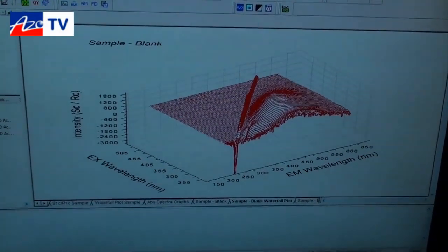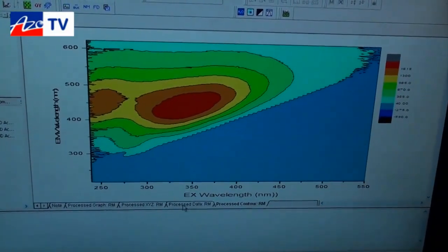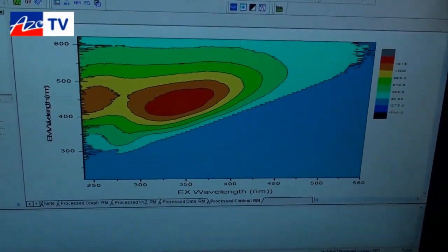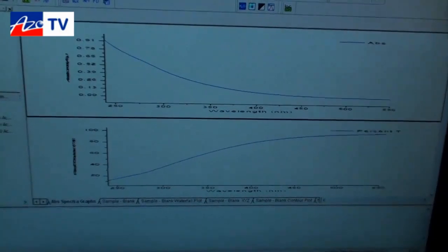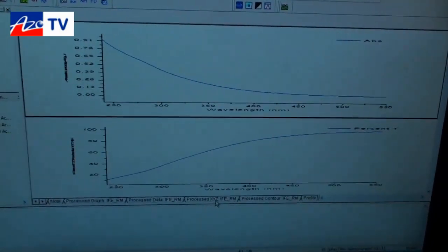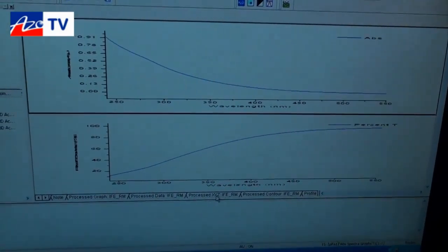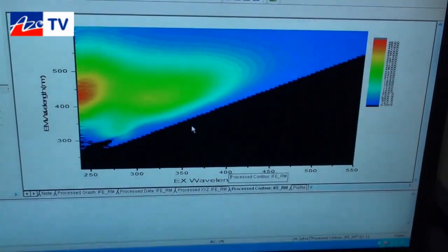So this is a raw picture of the unprocessed data. Then I'll walk you through some of the processing steps that we can apply. One of the processing steps involves the inner filter effect correction. And the inner filter effect correction can be followed by removal of the overlap band for the excitation and the emission. So we process the data and end up with a fully corrected spectrum.